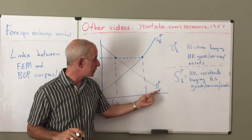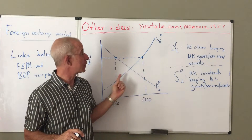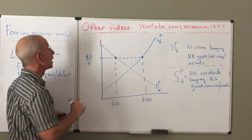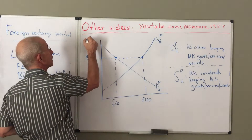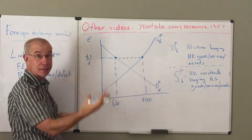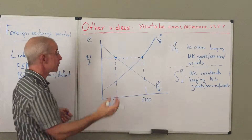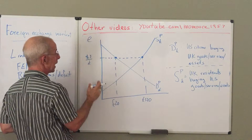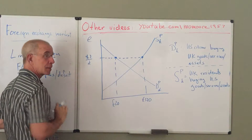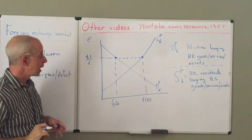So this is the private demand for pounds, the private supply of pounds, and we have the exchange rate — the price of pounds — on this axis, with the number of dollars it takes to buy a pound.